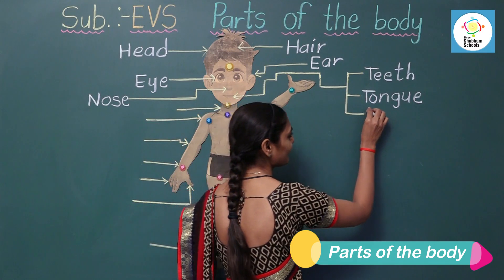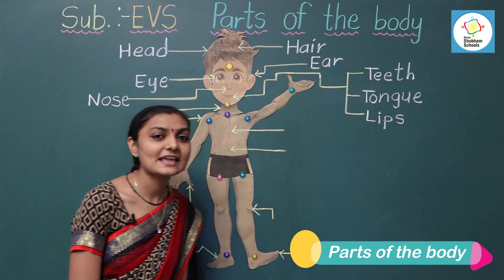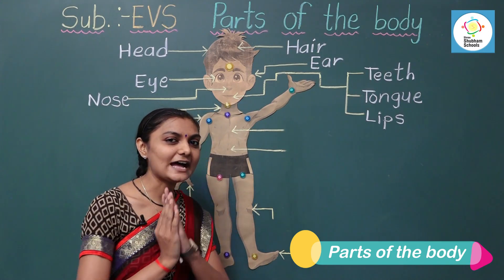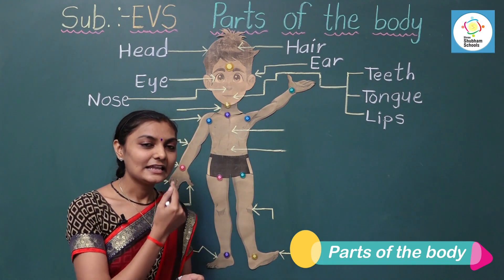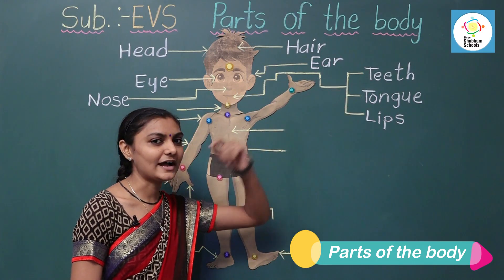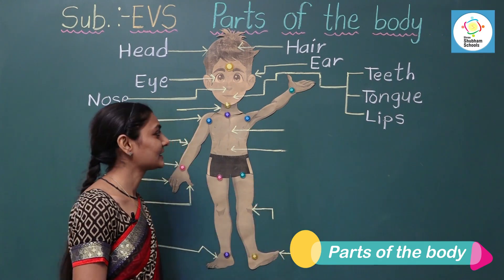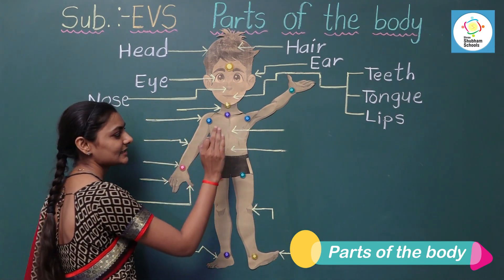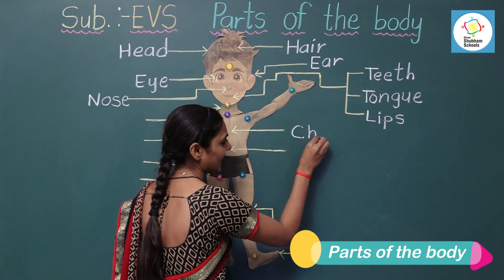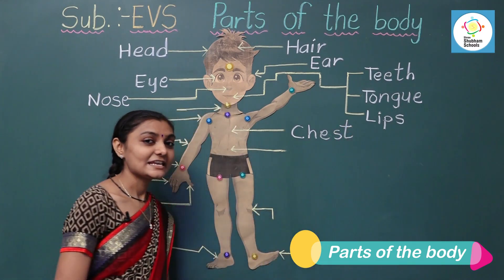Next one is lips — L-I-P-S. We have two lips. We can speak with the use of our lips. So, these are the three parts of our mouth: teeth, tongue and lips. Next one is chest — C-H-E-S-T. In the chest, we have many internal parts.